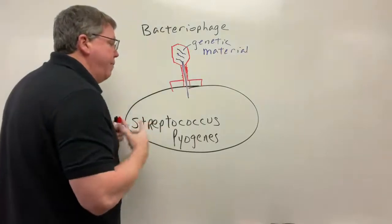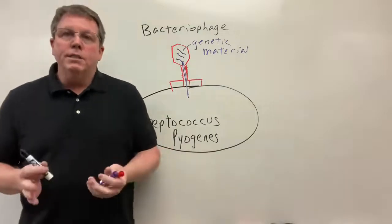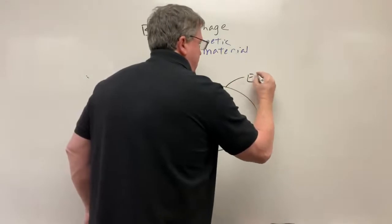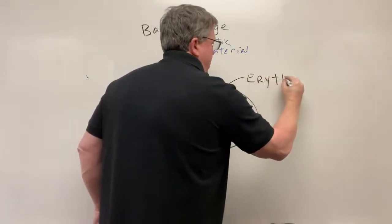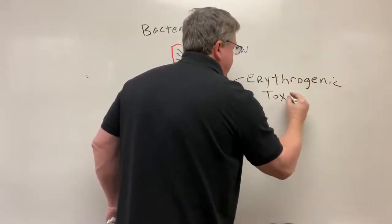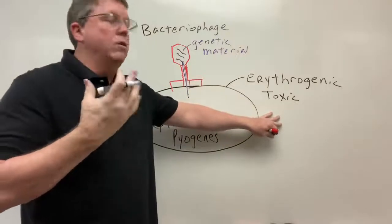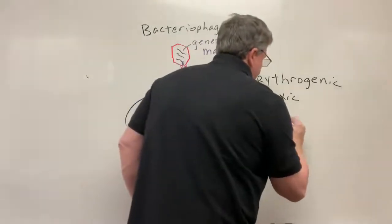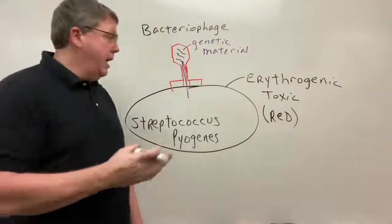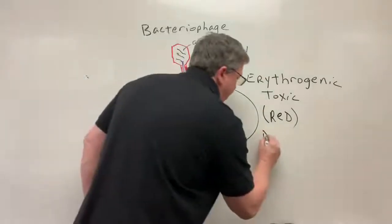Now what's going to happen next is the Streptococcus is going to change its function, and it's going to start to make something called an erythrogenic toxin. An erythrogenic toxin is something that produces or turns things red. One of the signs of scarlet fever is a red rash on the skin.